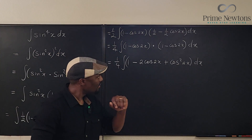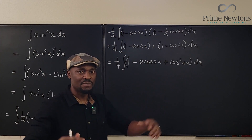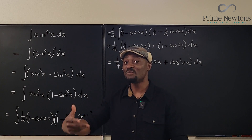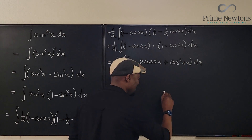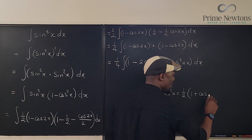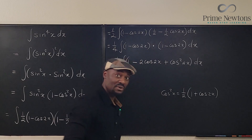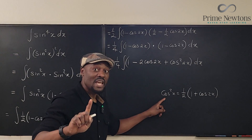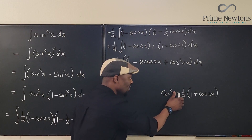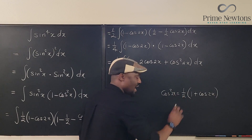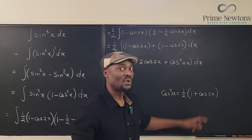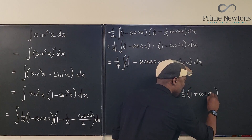How do we handle cos²(2x)? It's the same rule we applied before. We said cos²x = ½(1 + cos2x). Now we apply the same thing but replace x with 2x: cos²(2x) = ½(1 + cos4x). Anywhere you see x, just double it, so 2x becomes 4x. That's it — we're done with the substitution.